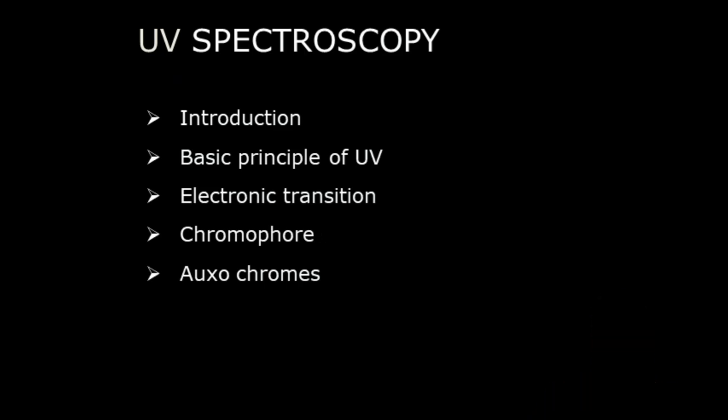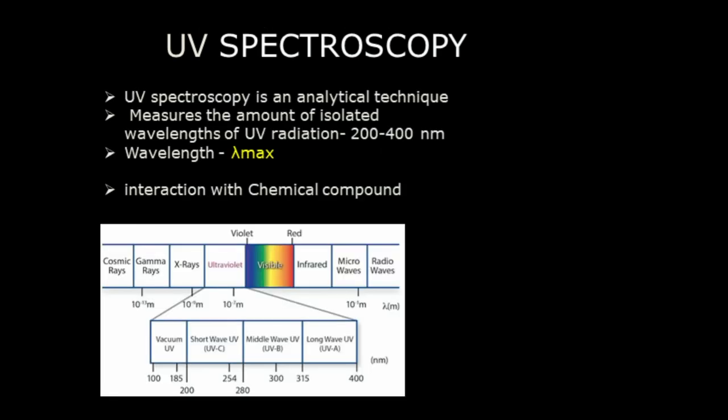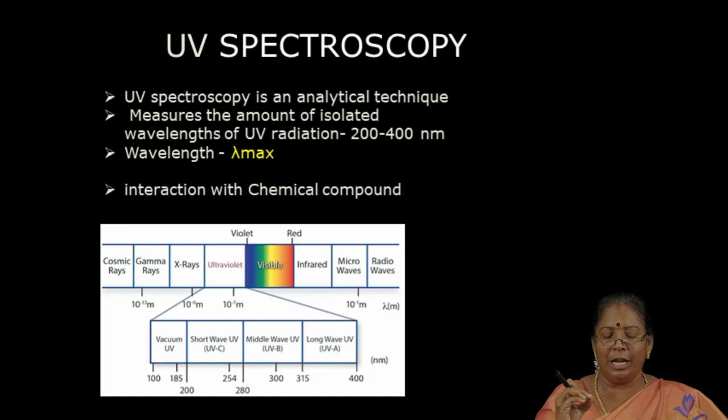UV Organic Spectroscopy is nothing but electronic transition spectra as well as absorption spectroscopy. Here in this slide, we are going to see the visible region as well as the UV region. The UV region is an analytical technique which is used to determine the structure of electronic compounds as well as chemical compounds, and also the substitutions which are present in that particular compound are also identified. The unit of this UV spectroscopy is lambda max. When electromagnetic waves interact with the chemical compounds, they make the molecule absorb the energy and make the electrons jump from the ground state to the excited state.